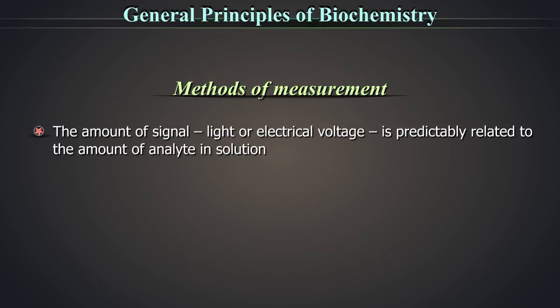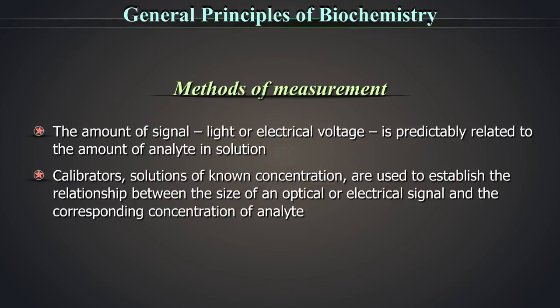The amount of signal, light or electrical voltage, is predictably related to the amount of analyte in solution. Calibrators, solutions of known concentration, are used to establish the relationship between the size of an optical or electrical signal and the corresponding concentration of analyte.